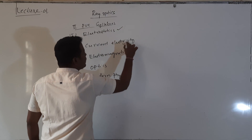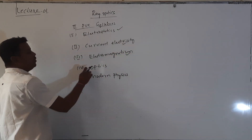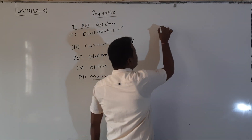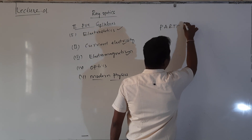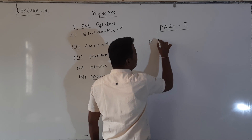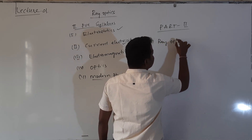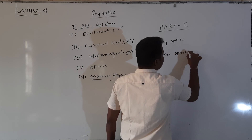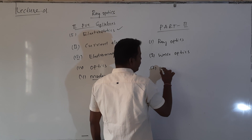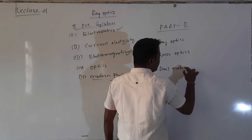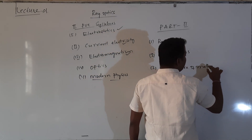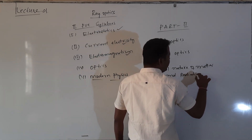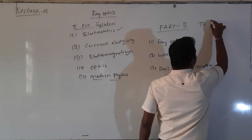Electrostatics completed, current electricity completed, electromagnetism completed. Now we will move to Optics. In Modern Physics also, nuclei completed, semiconductors completed. In Part 2, the chapters left for us are: the first chapter is Ray Optics, the second is Wave Optics, and the next one is Photoelectric Effect or Dual Nature of Matter and Radiation.